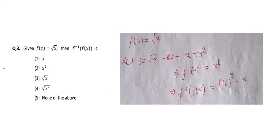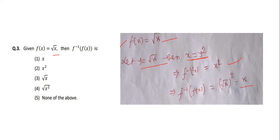Question three: f(x) = √x. Find f inverse of f(x). If we let y = √x, then squaring both sides gives x = y², so f inverse(x) = x². Therefore f inverse(f(x)) = f inverse(√x) = (√x)² = x. Option number 1 is the correct answer.